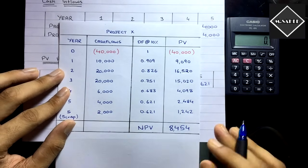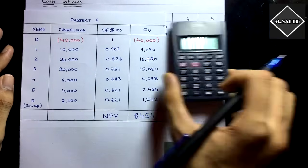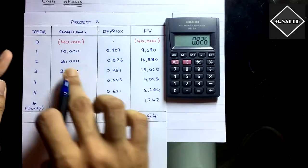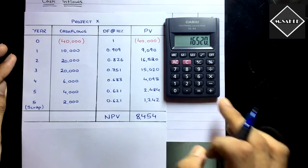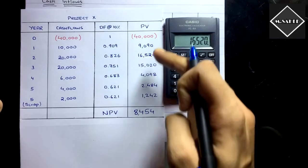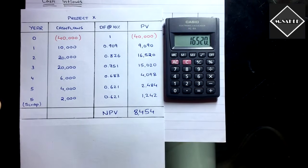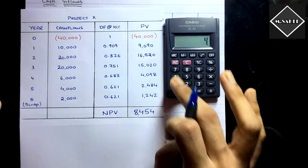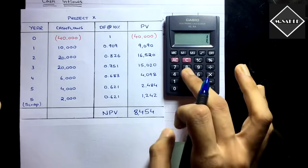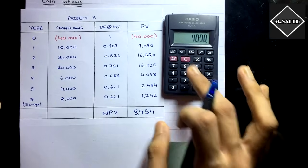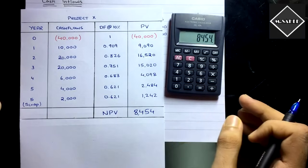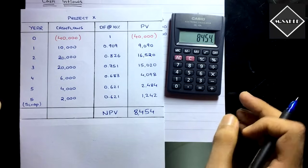Now multiply each cash flow by its discounting factor to get the present value. For example, 20,000 × 0.826 = 16,520. Add up all the present values: −40,000 + 9,090 + 16,520 + 15,020 + 4,098 + 2,484 + 1,242 = 8,454. So the net present value of Project X is 8,454.